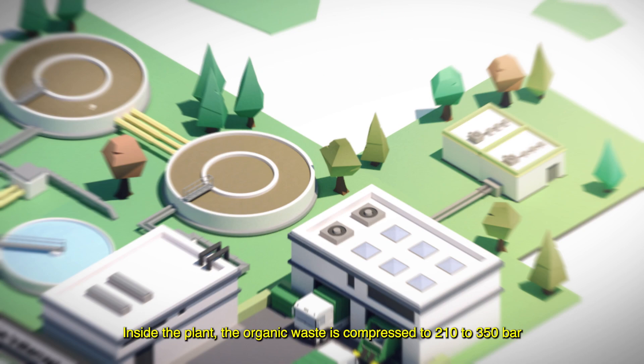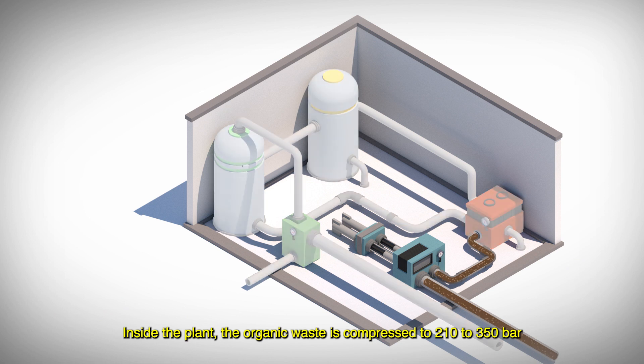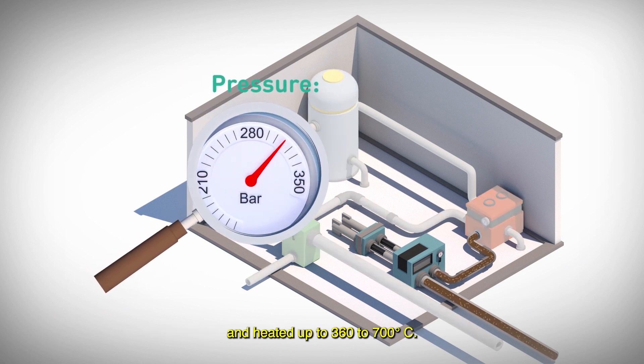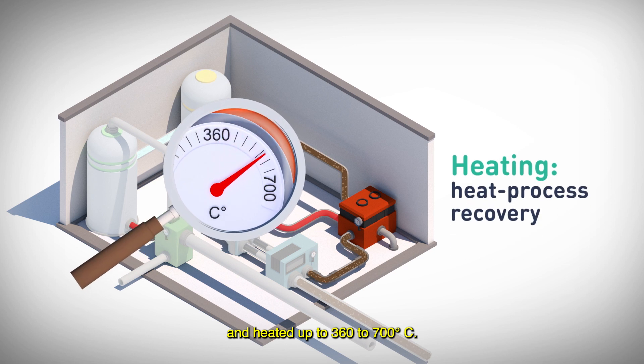Inside the plant, the organic waste is compressed to 210 to 350 bar and heated up to 360 to 700 degrees Celsius.